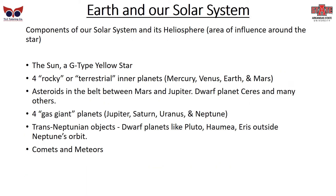The major components of our solar system and its heliosphere — the area of influence around the star where the solar wind sweeps away radiation — include the Sun, a G-type yellow star; four rocky or terrestrial inner planets: Mercury, Venus, Earth, and Mars; asteroids in a belt between Mars and Jupiter, including the dwarf planet Ceres; four gas giant planets: Jupiter, Saturn, Uranus, and Neptune; trans-Neptunian objects including dwarf planets like Pluto, Haumea, and Eris, all outside Neptune's orbit; and comets and meteors running throughout the solar system.